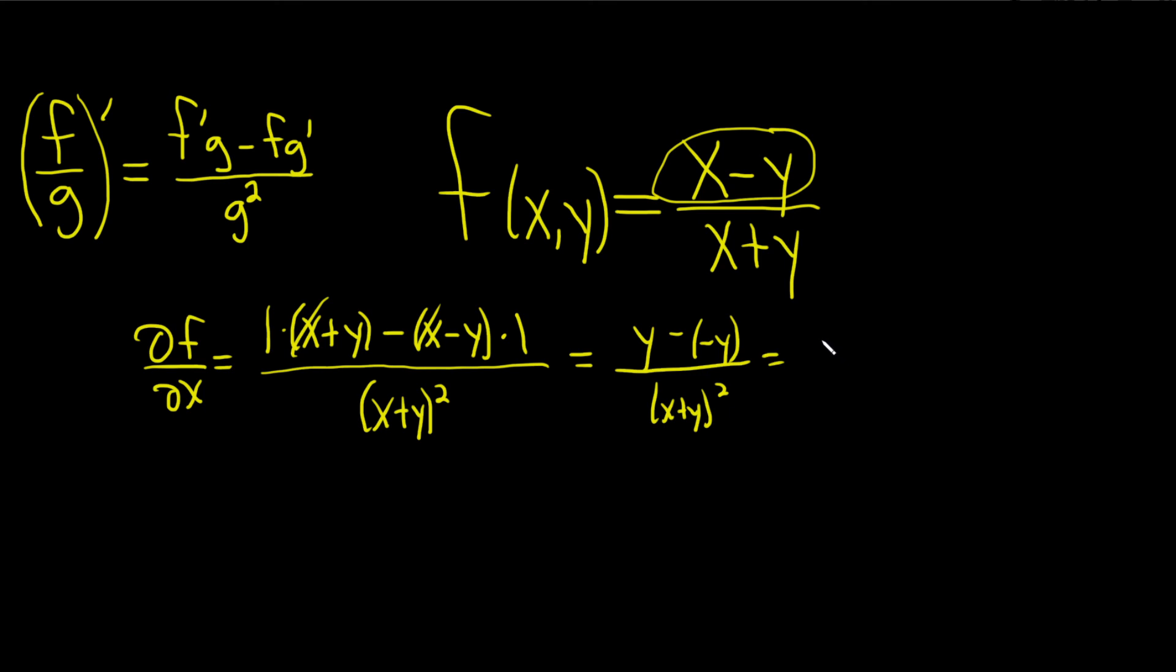End up with y plus y, so this is just 2y over x plus y squared. And that would be the partial derivative with respect to x.